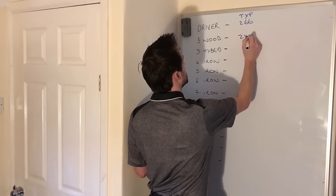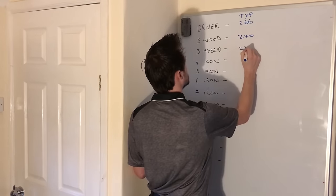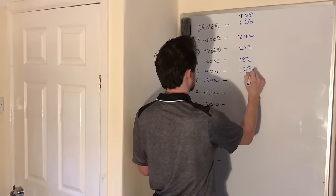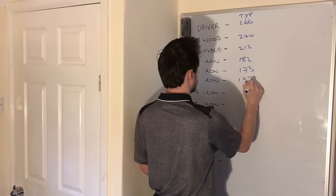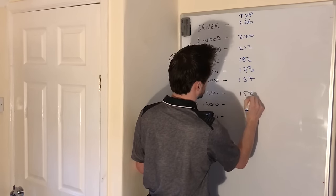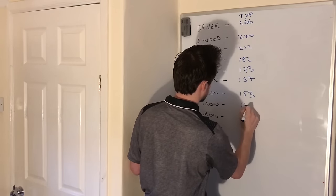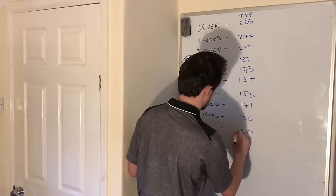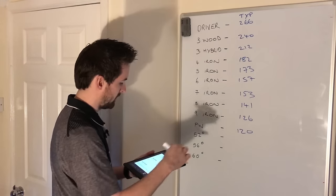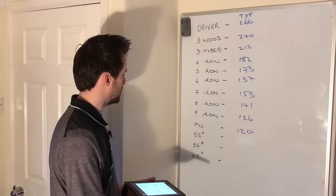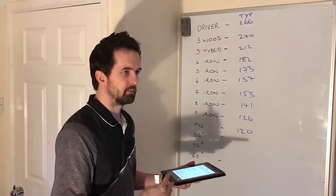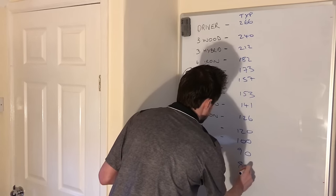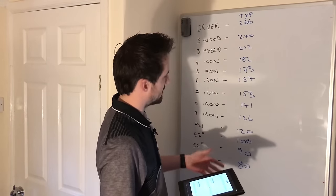226 for my driver, 240 with my 3-wood, 212 with my hybrid, 182 on the 4-iron, 173 on the 5, 157 on the 6, 153 for 7, 141 on the 8, 126, 120, 120, and then for the last three wedges, game golf's a little bit harder to specifically say what they are, because I could be using it for bump and run, things like that. I'll put down what I work to, which is 100, 90, and then 80, and then that kind of rounds up to my bag from game golf.